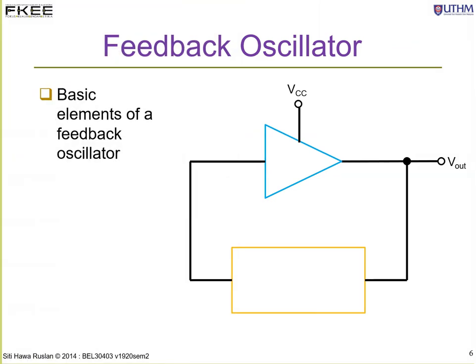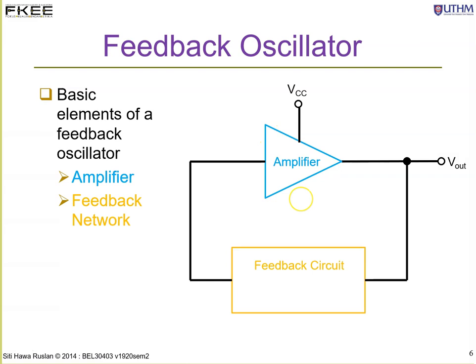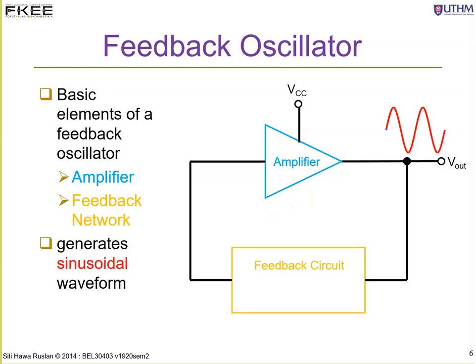A feedback oscillator in general has an amplifier followed by a feedback network. Unlike negative feedback, oscillators use positive feedback, where a sinusoidal waveform will be generated if we fulfill the Barkhausen criteria.